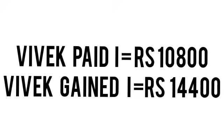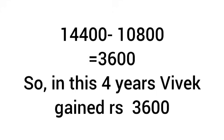So Vivek paid interest to the bank = rupees 10,800, and he gained interest from Tanuj = rupees 14,400. Because the rate per annum was higher when lending, Vivek made a profit. Profit = 14,400 − 10,800 = rupees 3,600. That means Vivek gained rupees 3,600 in this transaction.